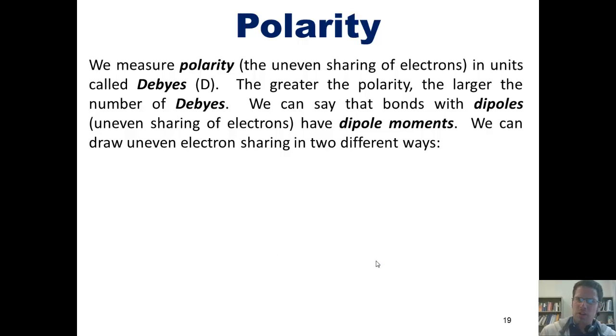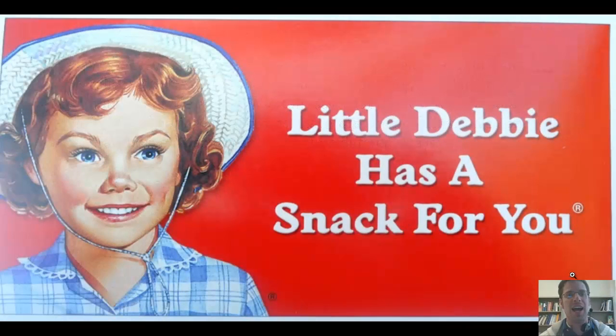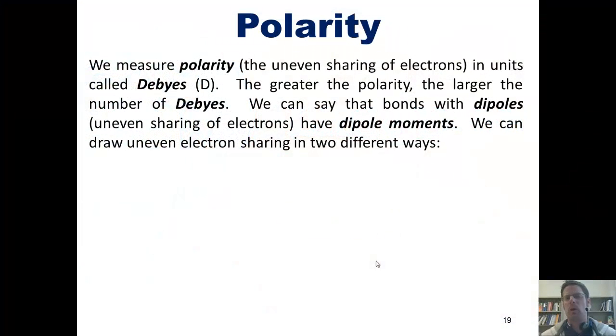Now, we measure polarity, this uneven sharing of electrons, in units called debyes. I've also heard them pronounce debbies. I'm honestly not sure which of those is correct, but I prefer calling them debbies, and the reason is because I like little Debbie snack cakes. The greater the polarity, the larger the number of debyes.